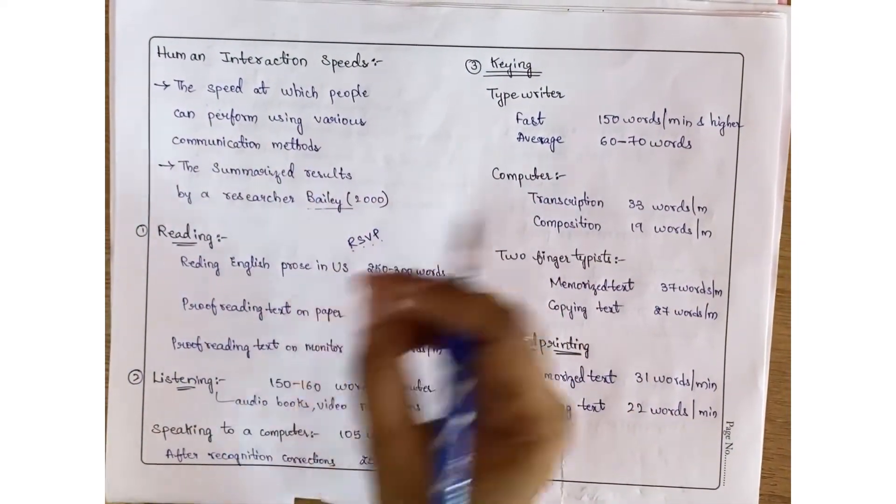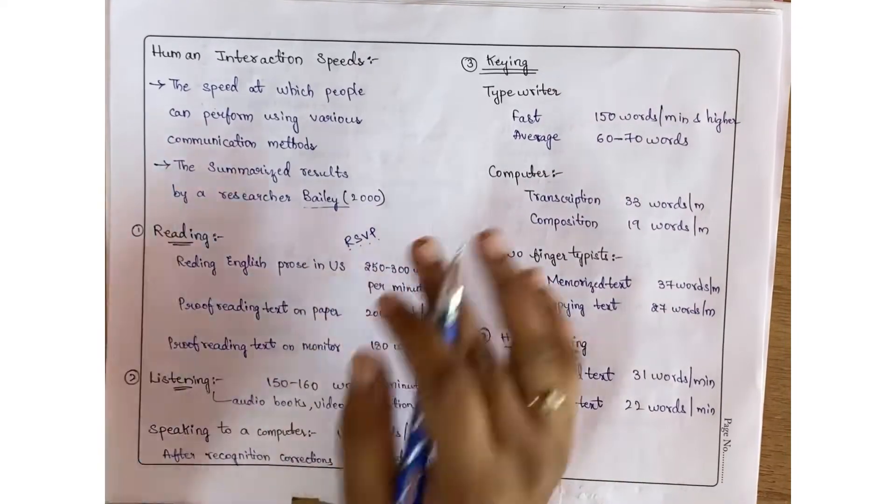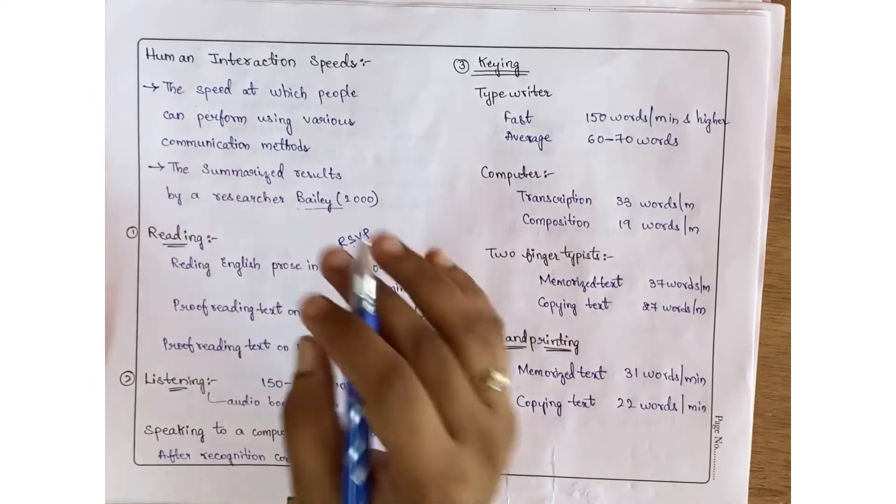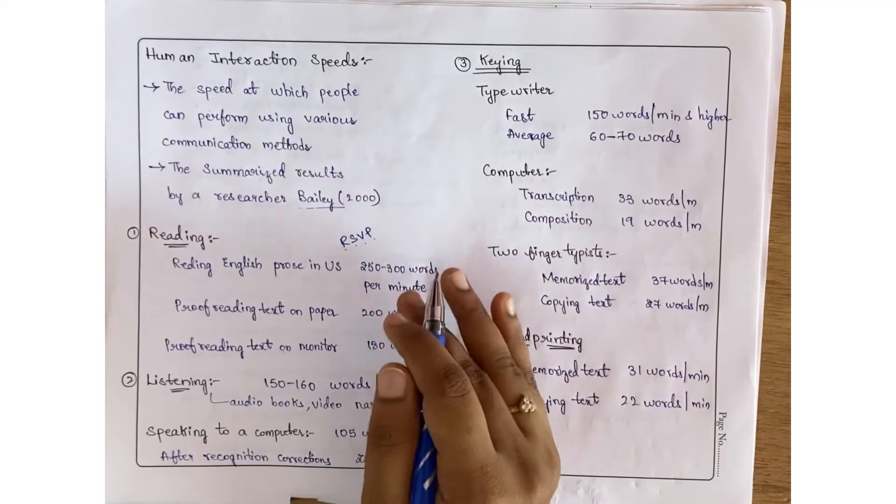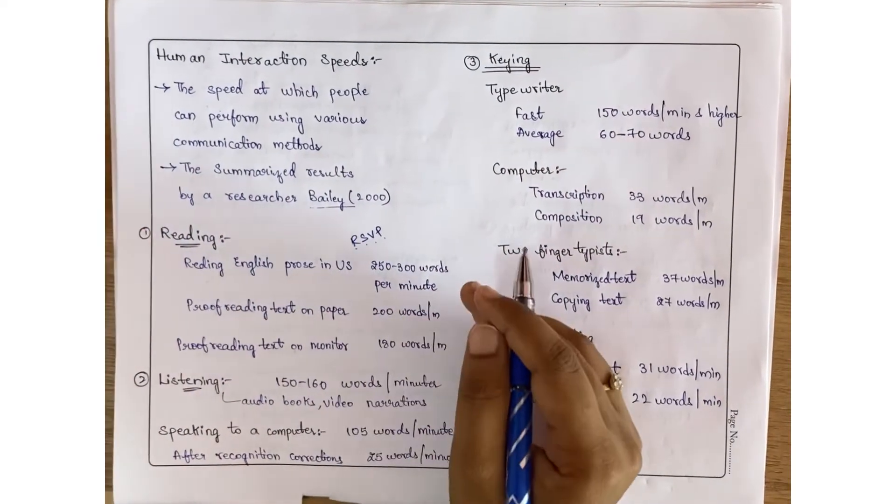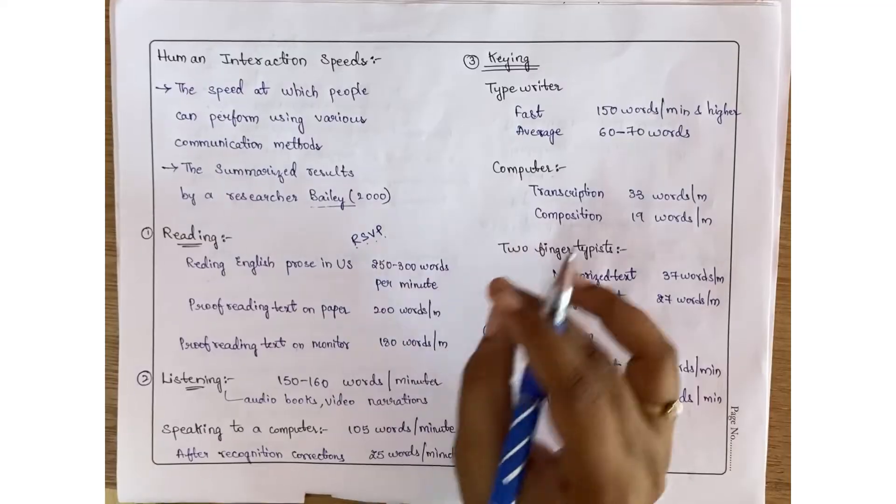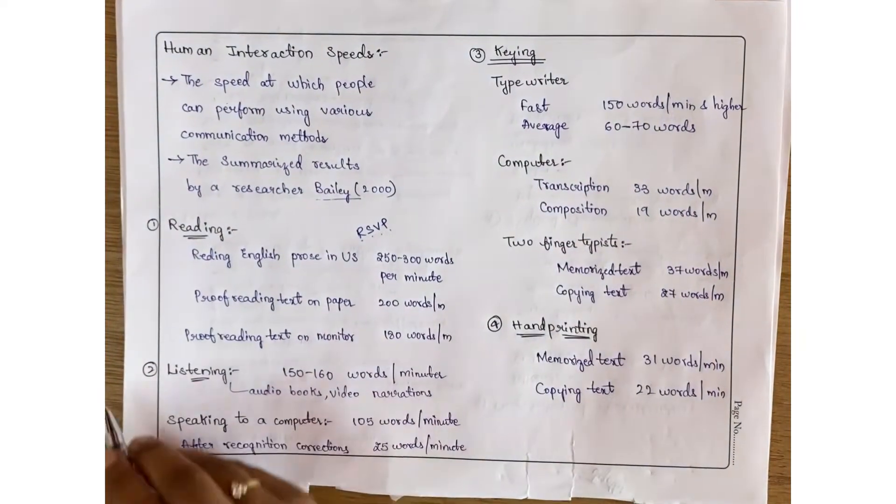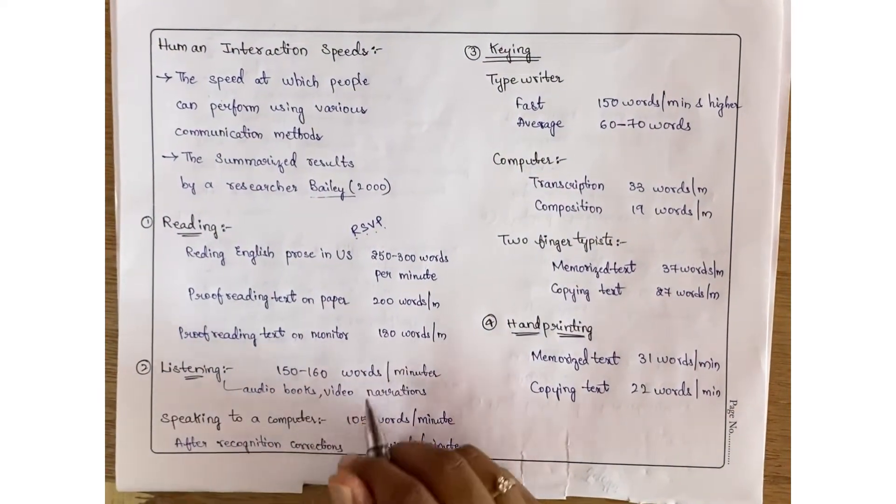After testing RSVP, they found the actual reading speed was 200 words per minute. Coming to listening: listening to audiobooks and video narrations is 150 to 160 words per minute.